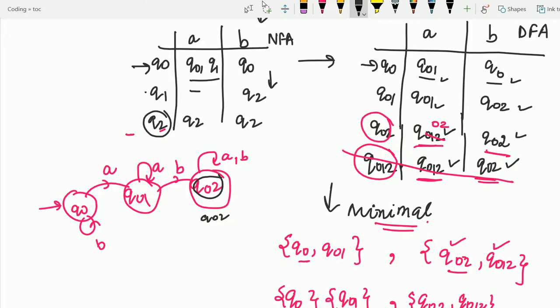So. We are getting this. DFA. As the minimal DFA. Friends. So. That is how you learnt. The conversion. Of. NFA to DFA. And finally. From DFA. To the minimal DFA. So. Thanks for listening.